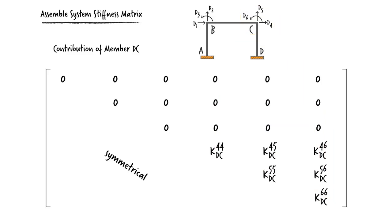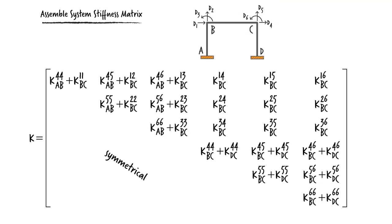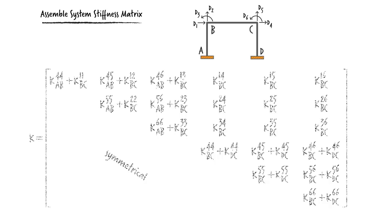Adding these three matrices, we get the stiffness matrix for the entire system. Since we already have determined the elements of the member's stiffness matrices, we can easily write the system's stiffness matrix numerically, like this.